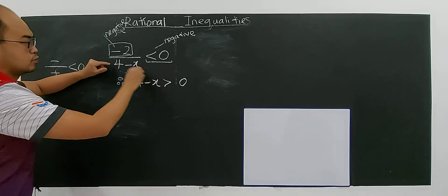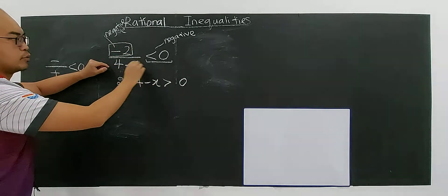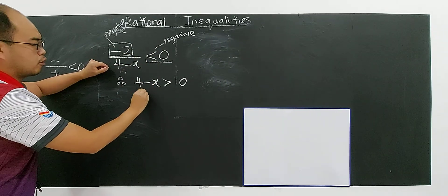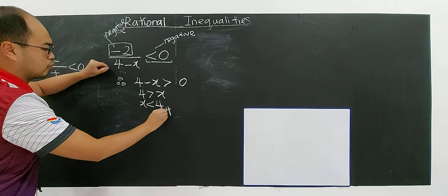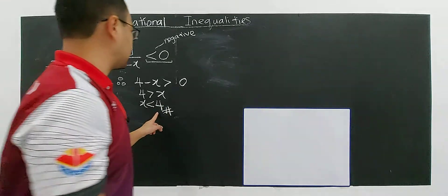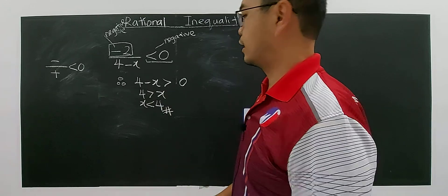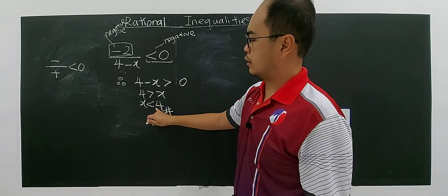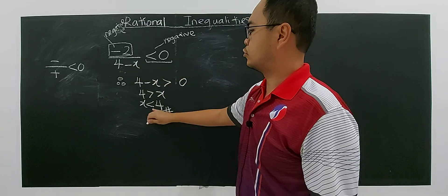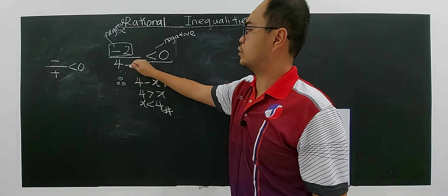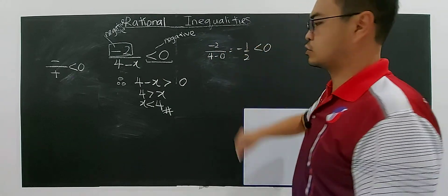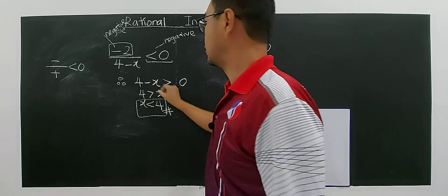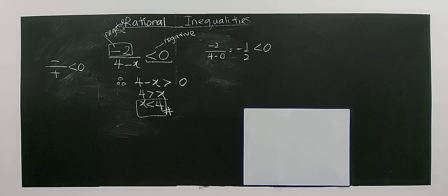4 minus x must be more than 0, meaning 4 more than x, so x less than 4. You choose any number less than 4 and you will get a negative number. For example, choose 0: negative 2 over 4 minus 0 gives negative one-half, which is less than 0 — which is true. So x less than 4 is the solution for this inequality. This is the first type of rational inequality.